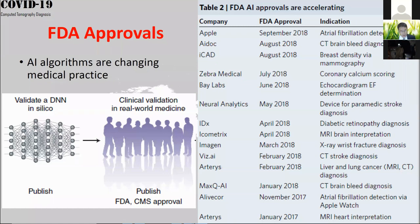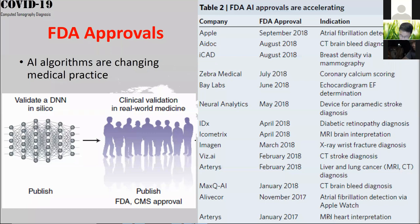AI algorithms are changing medical practice. You want to validate a deep neural network in silico using computer simulations, and then validate your trained model through clinical trials in real-world medicine. Over the past several years, the FDA has approved more and more AI-based algorithms using CT, X-ray, and MRI — all image-based algorithms.